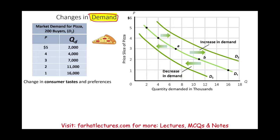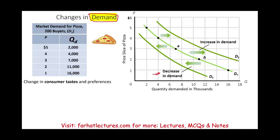If you shift to the left, at some point you would reach zero demand — so shifting to the left means you are decreasing. And if shifting to the left is decreasing, then shifting to the right means you are consuming more. You can actually see it visually: at $2, rather than demanding 11, you are demanding 16 — so what could be some factors other than price that could affect the change in demand?